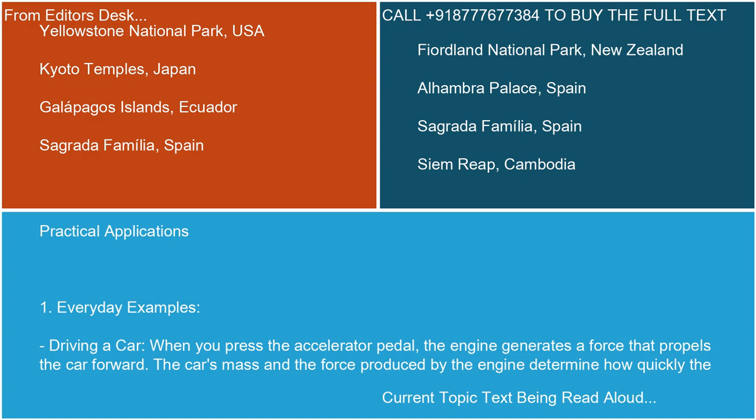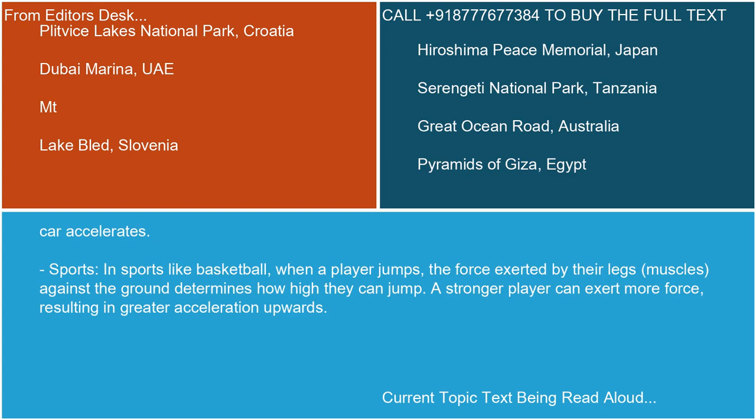Practical Applications 1: Everyday examples. Driving a car — when you press the accelerator pedal, the engine generates a force that propels the car forward. The car's mass and the force produced by the engine determine how quickly the car accelerates. Sports — in sports like basketball, when a player jumps, the force exerted by their leg muscles against the ground determines how high they can jump. A stronger player can exert more force, resulting in greater acceleration upwards.